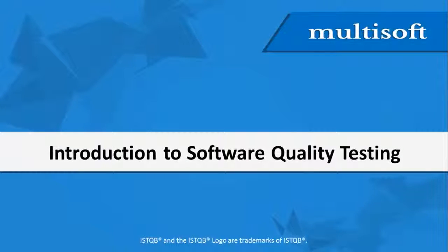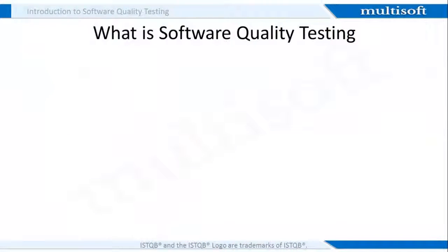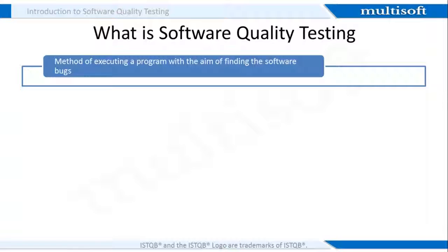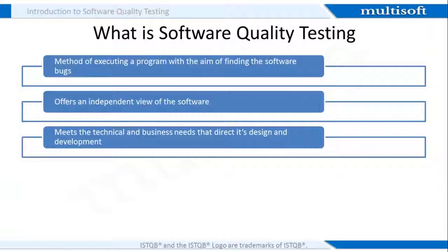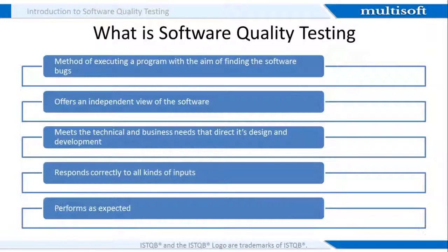All set to find the errors and defects in the software? Let us start the session with an introduction to software quality testing. Before we go deep in the details of ISTQB online training, let us acquaint ourselves with the knowledge of what exactly is software quality testing. Software testing is a process of executing a program or application with the intent of finding the software bugs. It provides an objective, independent view of the software to allow the business to appreciate and understand the risks of software implementation. Also, it meets the business and technical requirements that guide its design and development and works as expected.